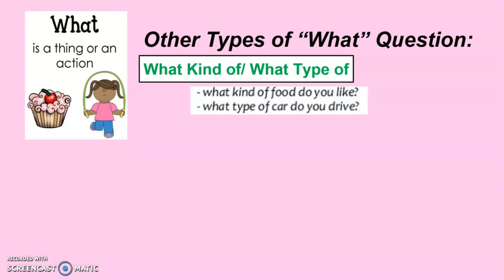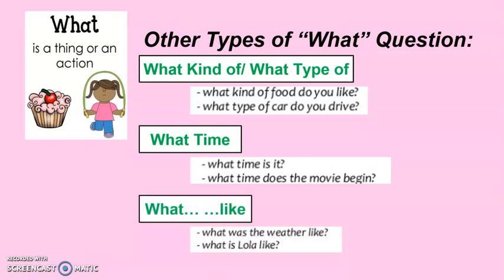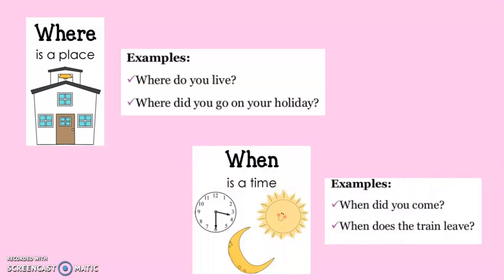'What time' is used to ask about a specific time — like 'What time is it?' or 'What time does the movie begin?' 'What was the weather like?' or 'What is lola like?' 'Where' is used in questions to ask about places. 'When' is used for asking about a general or specific time.